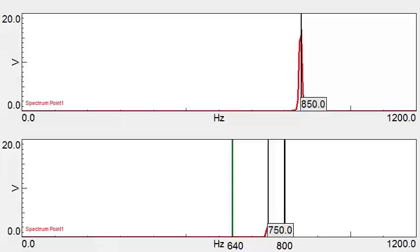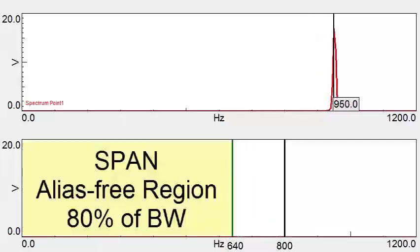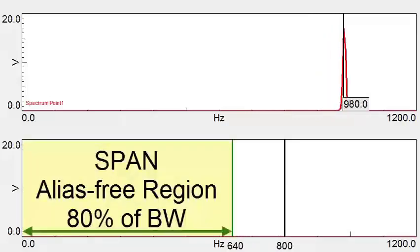The anti-aliasing filter will completely attenuate incoming signals that are 20% above the specified bandwidth, therefore leaving 80% of the bandwidth alias-free. This alias-free region is called the span. Thank you for watching!